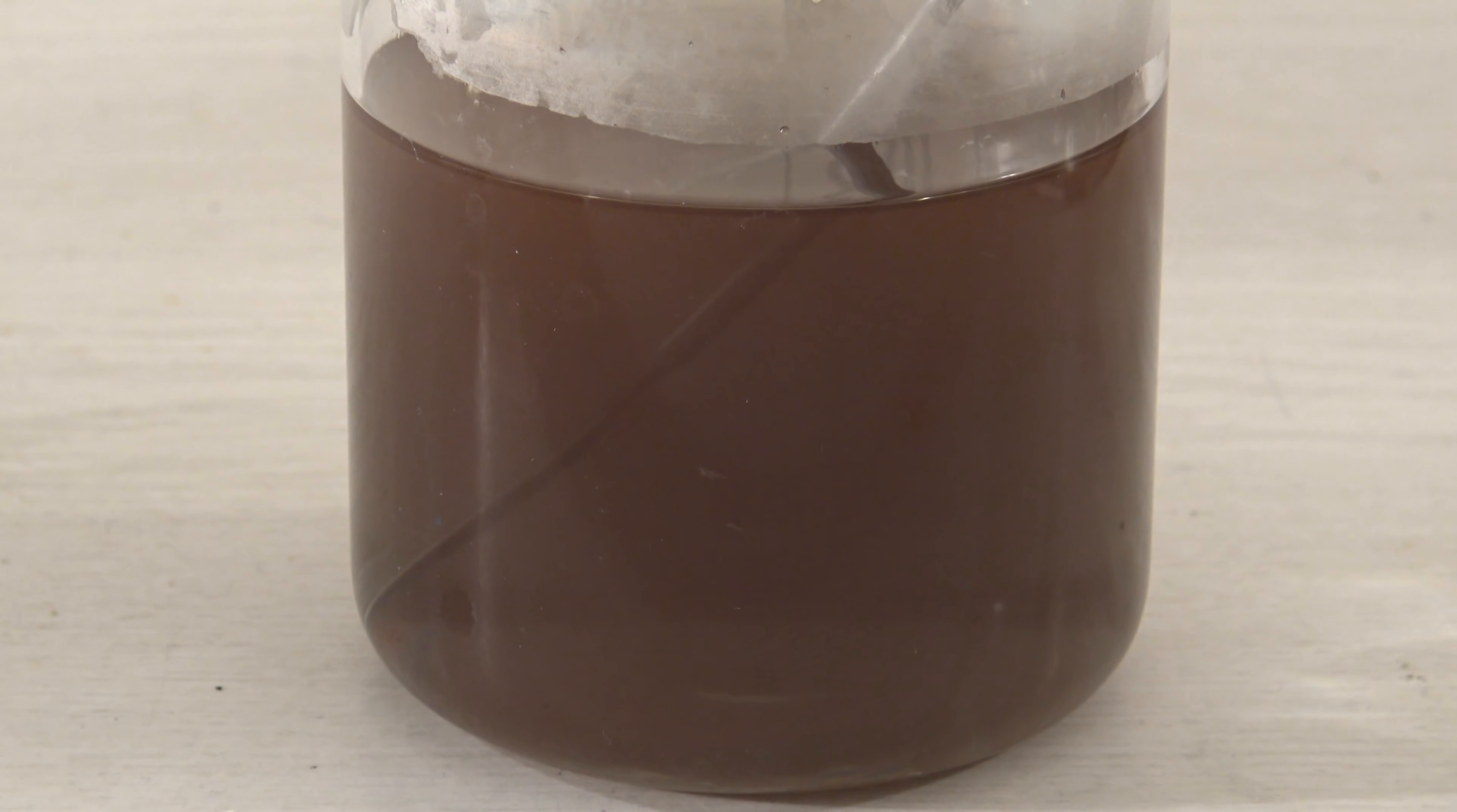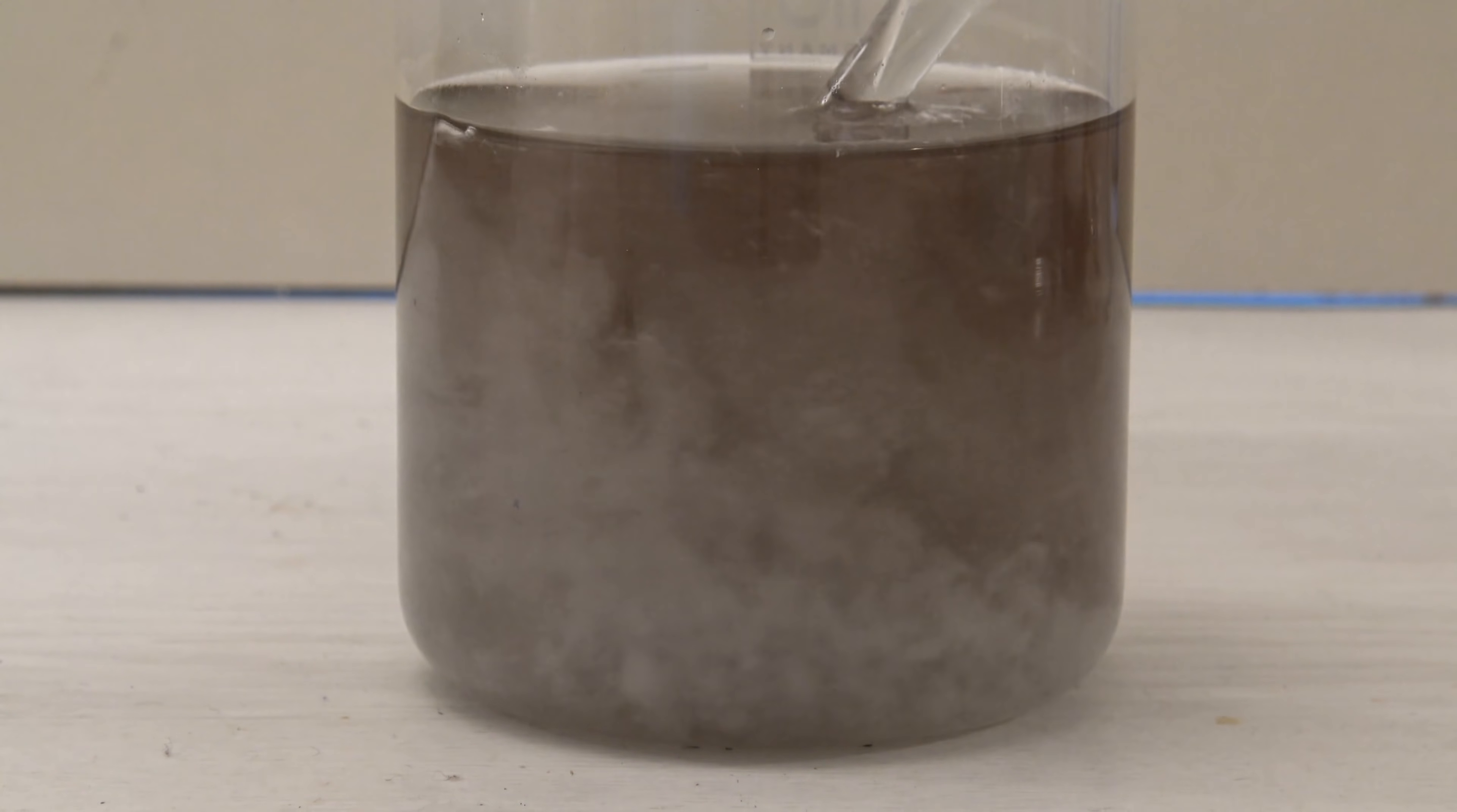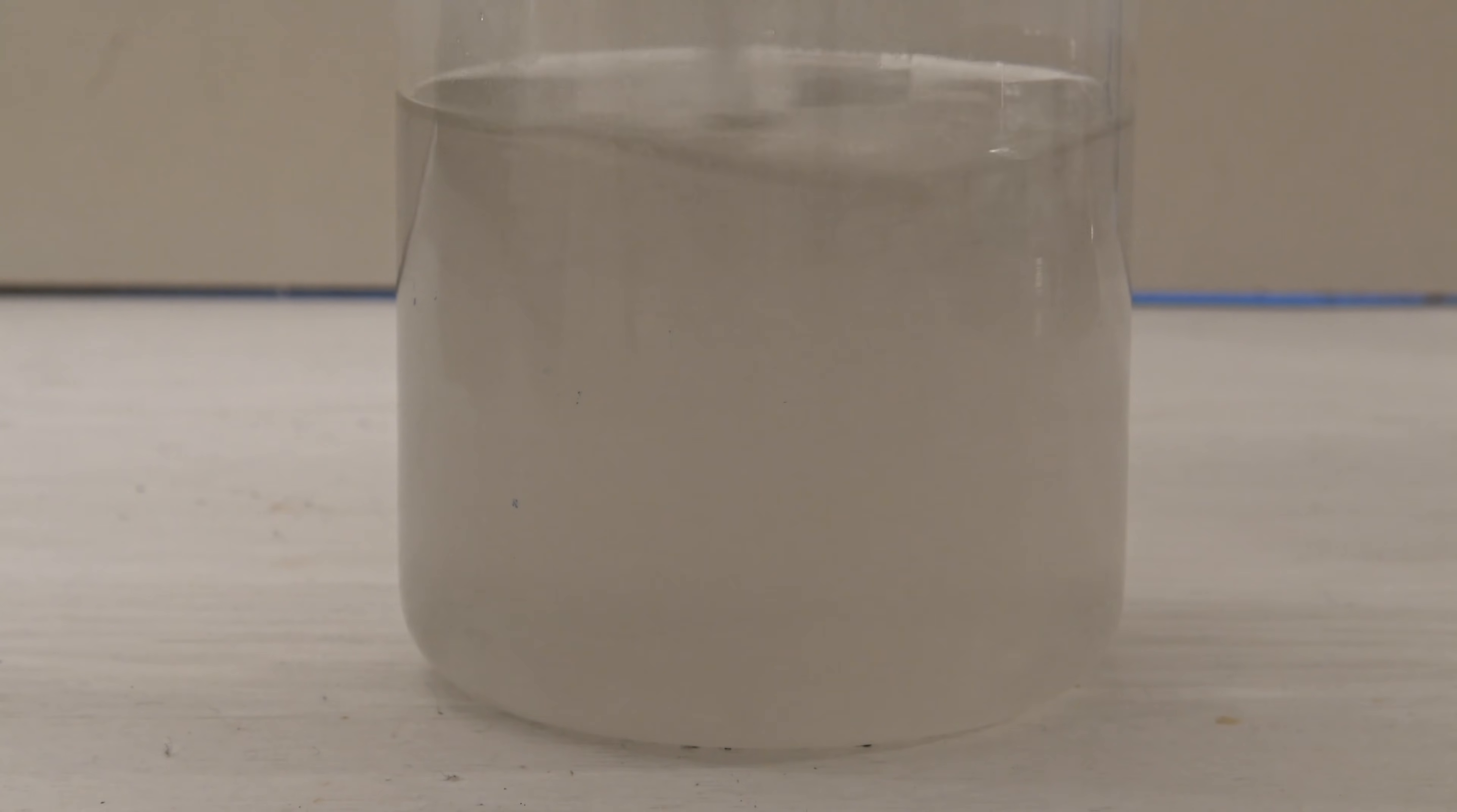To get the benzoic acid out of the solution and reduce the manganese dioxide, 45 milliliters of 1 molar sulfuric acid were added. This protonates the benzoic acid, which is poorly soluble in this form and precipitates. The acid was added in portions, so the manganese dioxide was reduced before the benzoic acid did precipitate, otherwise inclusions might be present in the product.